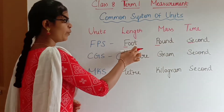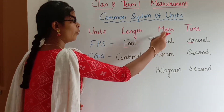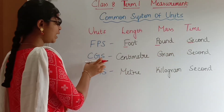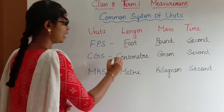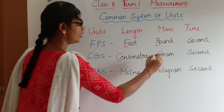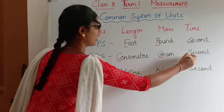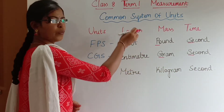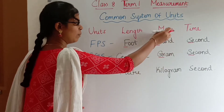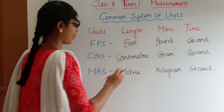In FPS, foot is used for length, pound is used for mass, and second is used for time. In CGS, C stands for centimeter, G stands for gram, and S stands for second. So centimeter is for length, gram is for mass, and second is for time.